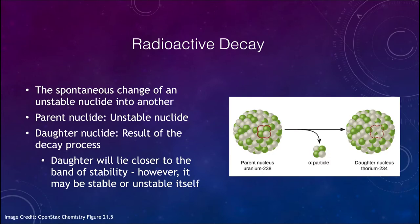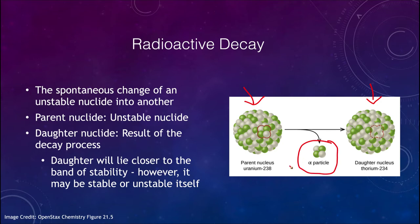Let's start looking at what we mean by radioactive decay. It is the change of an unstable nucleus into another, and it is spontaneous — it just happens all by itself. We have the parent nucleus, what we start with, and we have the daughter nucleus. In this case, uranium-238 is the parent and thorium-234 is the daughter nucleus. An alpha particle is emitted, and there is a certain probability that it will occur at any given time.